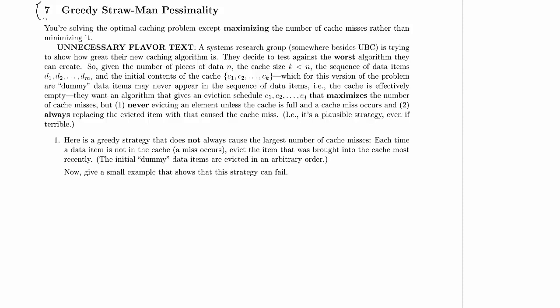And we're just going to do the intro to the problem right now since there's multiple parts. So we're solving the optimal caching problem, except we're maximizing the number of cache misses rather than minimizing it. And we could stop there. The optimal caching problem is in the textbook. We already know the general parameters to it, and we could work on solving the problem from there.